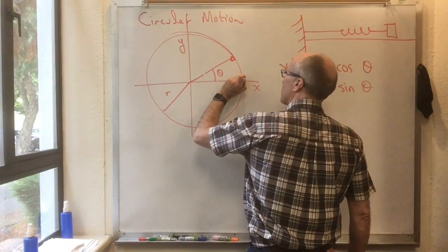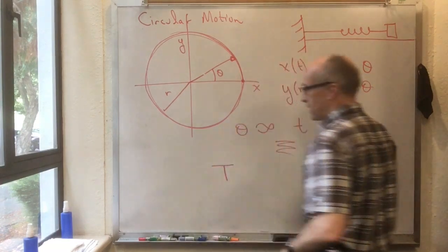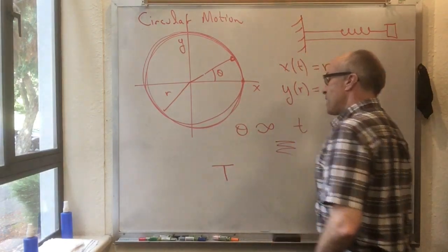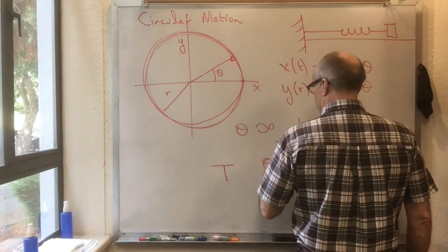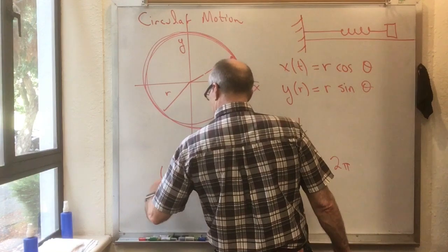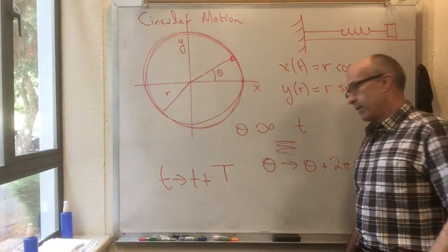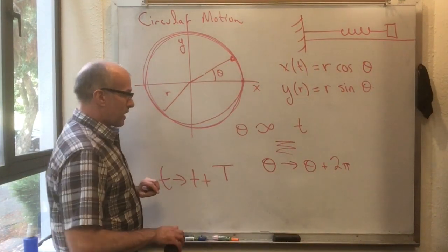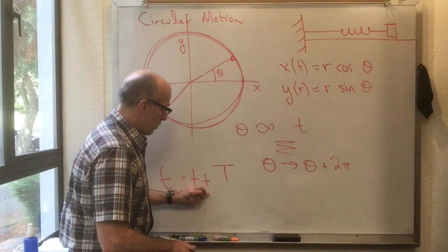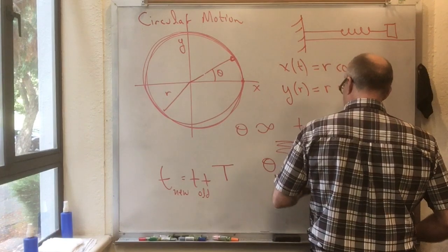If this is uniform motion and it takes capital T of time to go all the way around, so capital T of time, that's a period to go all the way around. Meanwhile, in that time period, theta should increase by 2 pi. So if t goes to t plus capital T, then theta should go to theta plus 2 pi. If I have a t new, which is the t old plus a capital T, then I should get a theta new, which is a theta old plus 2 pi.